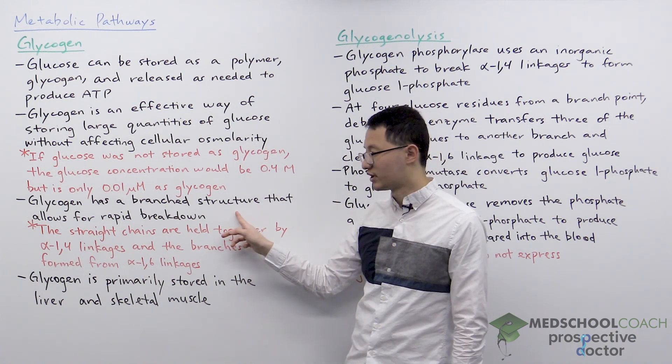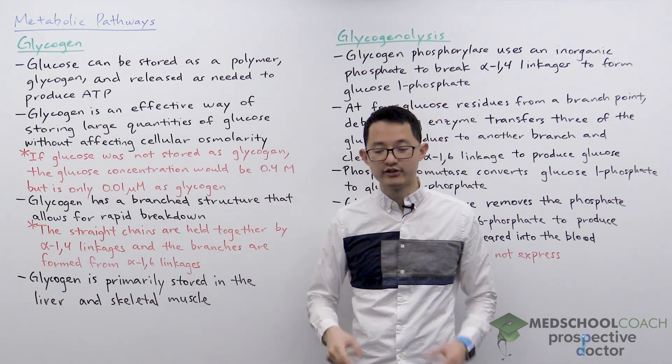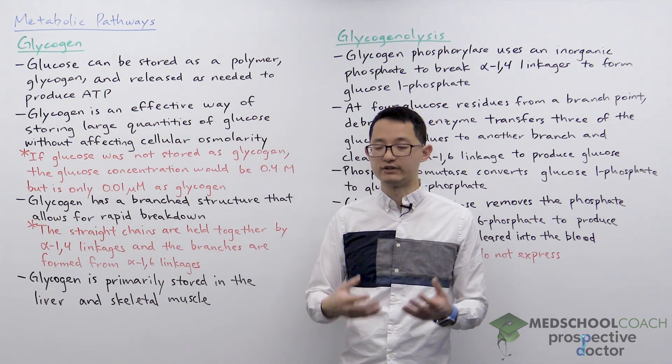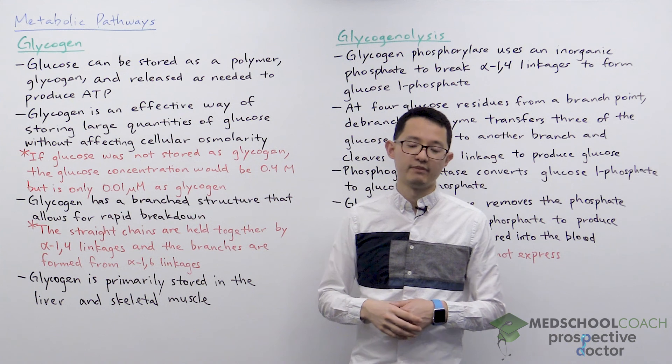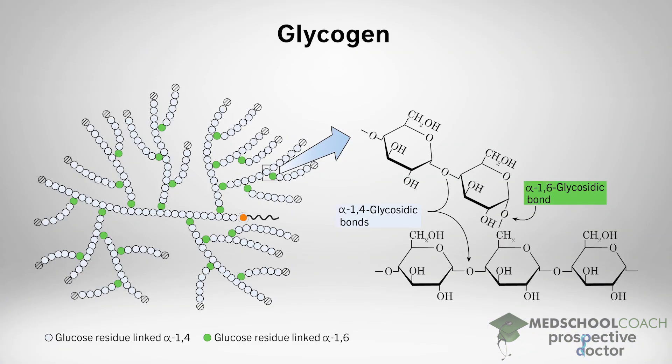Glycogen has a branch structure and you can see that structure in this diagram. The purpose of this branch structure is to have many ends to allow for rapid mobilization of glycogen. You have many ends where free glucose molecules can be broken off to quickly produce glucose when the body needs it.